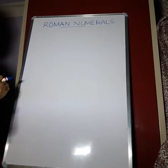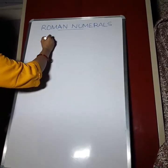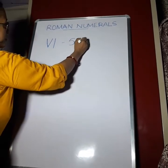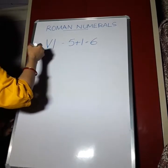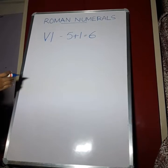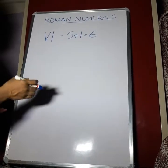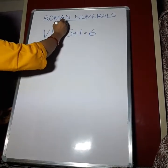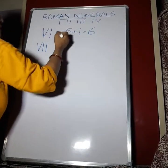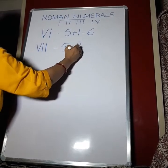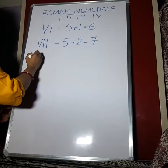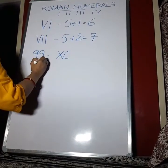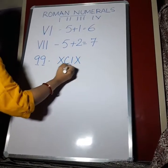When we write a smaller number to the right of a bigger number, it represents addition. For example, V with I to the right is 5 plus 1, which equals 6. For 7, we write V plus II. For 99, we combine the symbol for 90 — which is XC — with the symbol for 9 — which is IX — giving XCIX.